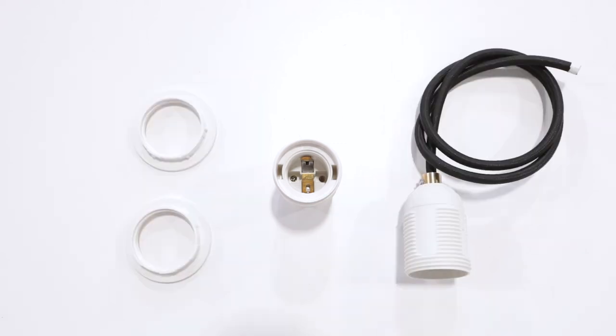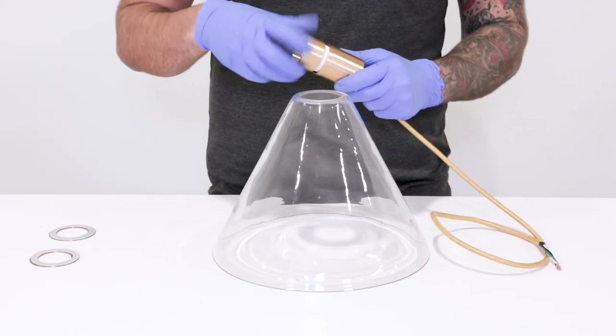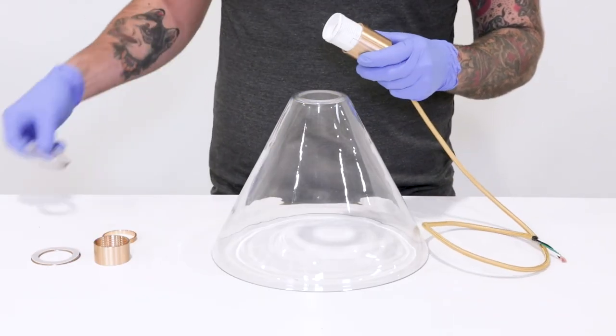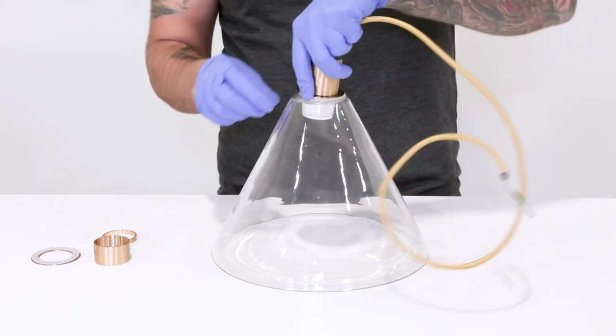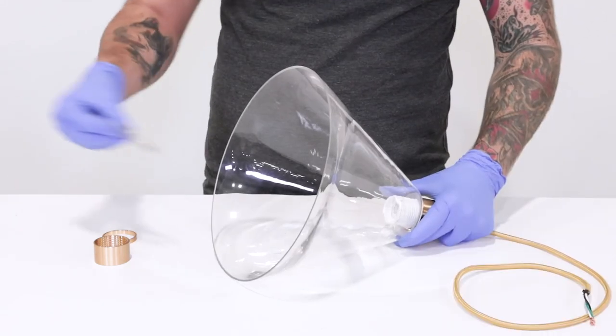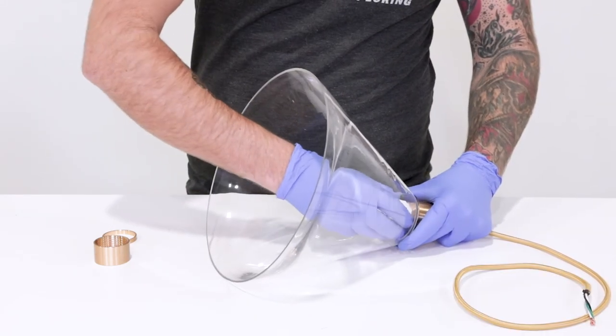For the AIO socket kit, remove the socket bottom and normal sized spacer ring. Then use both silicone and both metal spacers on each side of the shade to ensure full support of an oversized shade opening. Then thread back on the socket bottom.